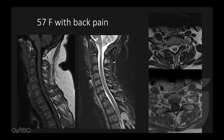Another patient, 57-year-old with back pain: notice metastasis to the spinous process of the upper thoracic spine. It could be from breast, lung, or renal cell — but look for the thyroid. There is a mass extending from the right thyroid gland into the tracheoesophageal groove, pushing the cervical esophagus to the left. This is thyroid cancer metastasis. She didn't know she had thyroid cancer and just presented with back pain.